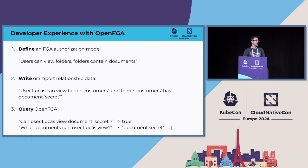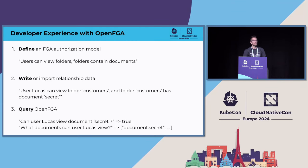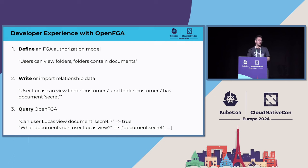There are different kinds of queries you can ask OpenFGA. For example, you can ask the very specific question: can this specific user perform this specific action on an individual object? We call that 'check,' and it returns a permitted or denied decision. We also have other queries that allow you to query authorization-related information in inverse form — for example, what resources can a user view? What documents can user Lucas view? We provide these APIs to query these questions from different angles.